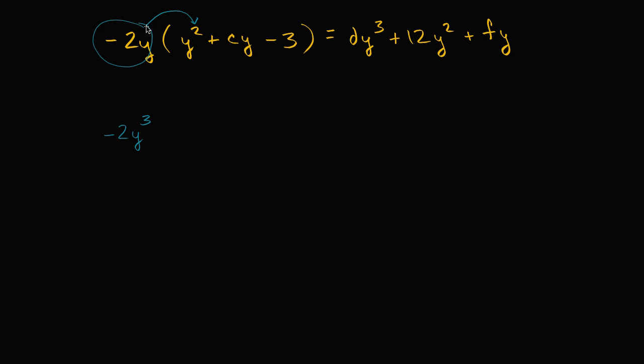All right, now let's multiply the negative two y times cy. Well that's going to be negative two times c. So negative two c. And then you're gonna have y times y. So negative two c y squared.